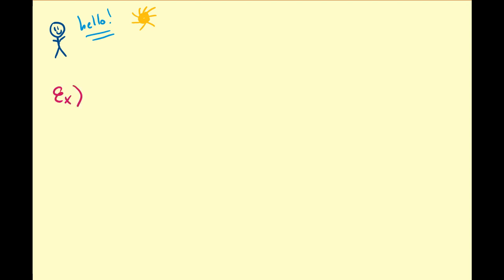So before we proceed, let's make sure that we know some basic things about differential calculus — the ordinary perspective. Recall that the first derivative of a function — let's use an example, say x to the fifth — this is an example of the power rule, so we can say that this is going to be equal to 5x to the fourth.